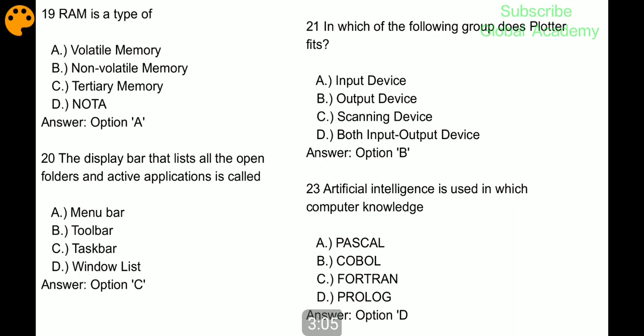RAM is a type of volatile memory. The bar that lists all the open folders and active applications is called taskbar. In which of the following groups does plotter fit? Output device, B part. Artificial intelligence is used in which computer knowledge? Prolog.